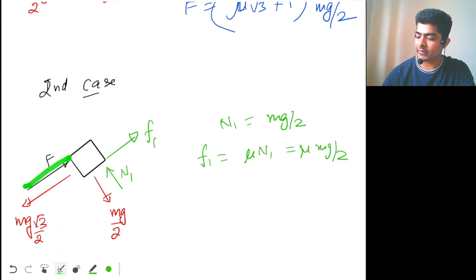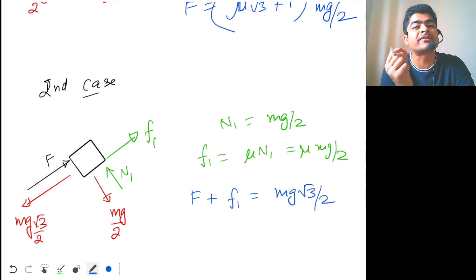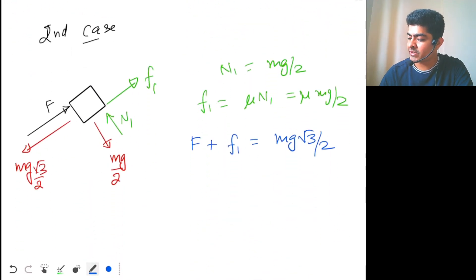Then again, F plus F1 should be equal to mg root 3 by 2, so F plus F1 should be equal to mg root 3 by 2. We are just preventing from sliding, so acceleration is 0. F is what? Mu root 3 plus 1 mg by 2,